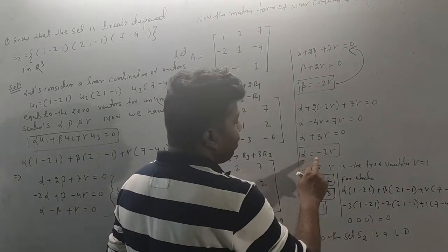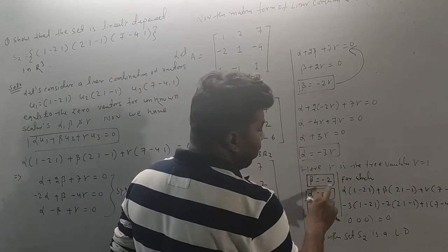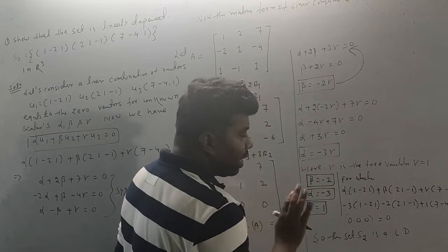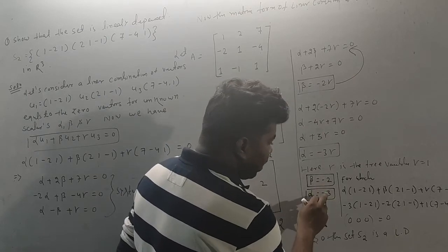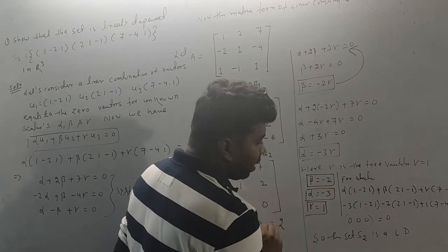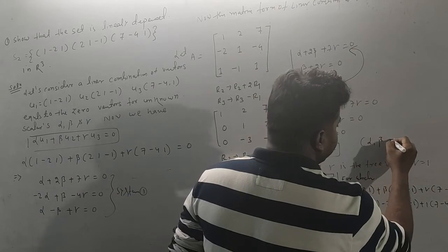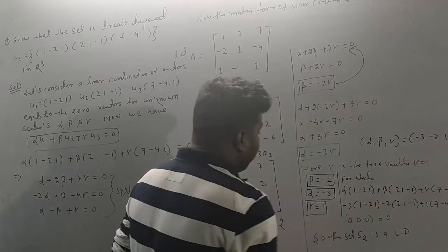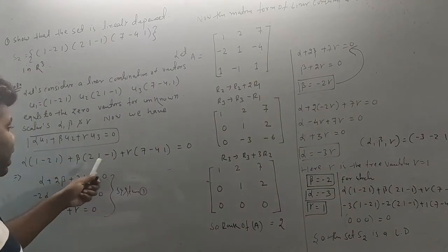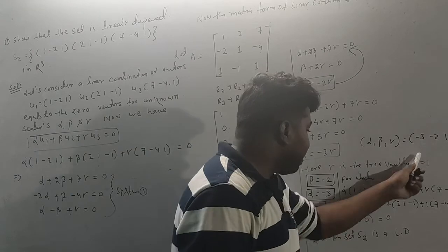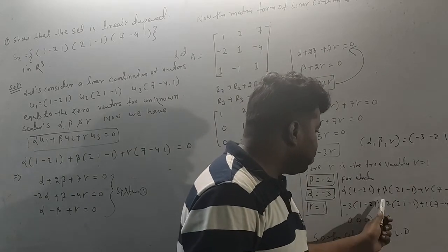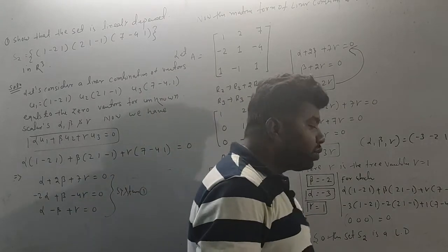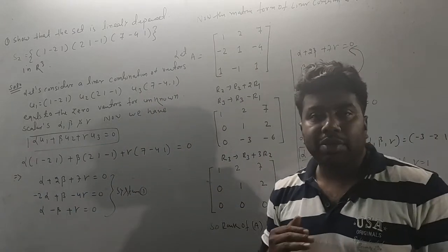Setting gamma equal to 1: alpha equals minus 3 into 1, so alpha equals minus 3; beta equals minus 2 into 1, so beta equals minus 2; and gamma equals 1. So the scalars are (alpha, beta, gamma) = (-3, -2, 1). Since these are not all zero, the set is linearly dependent.